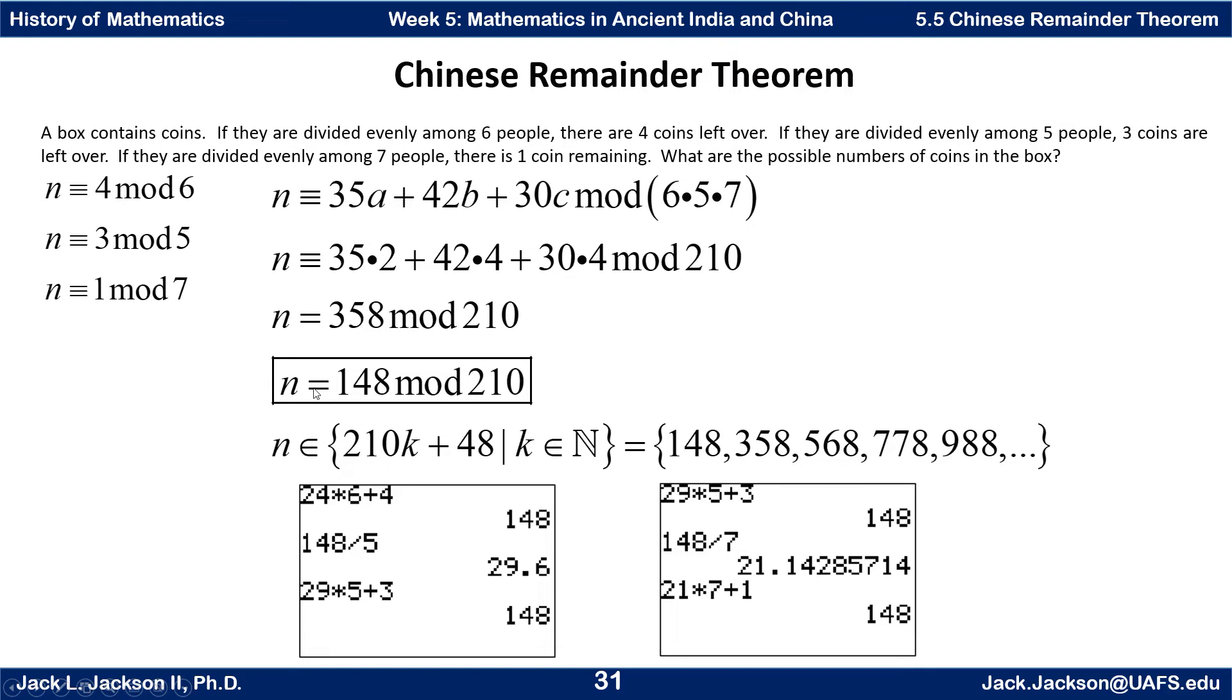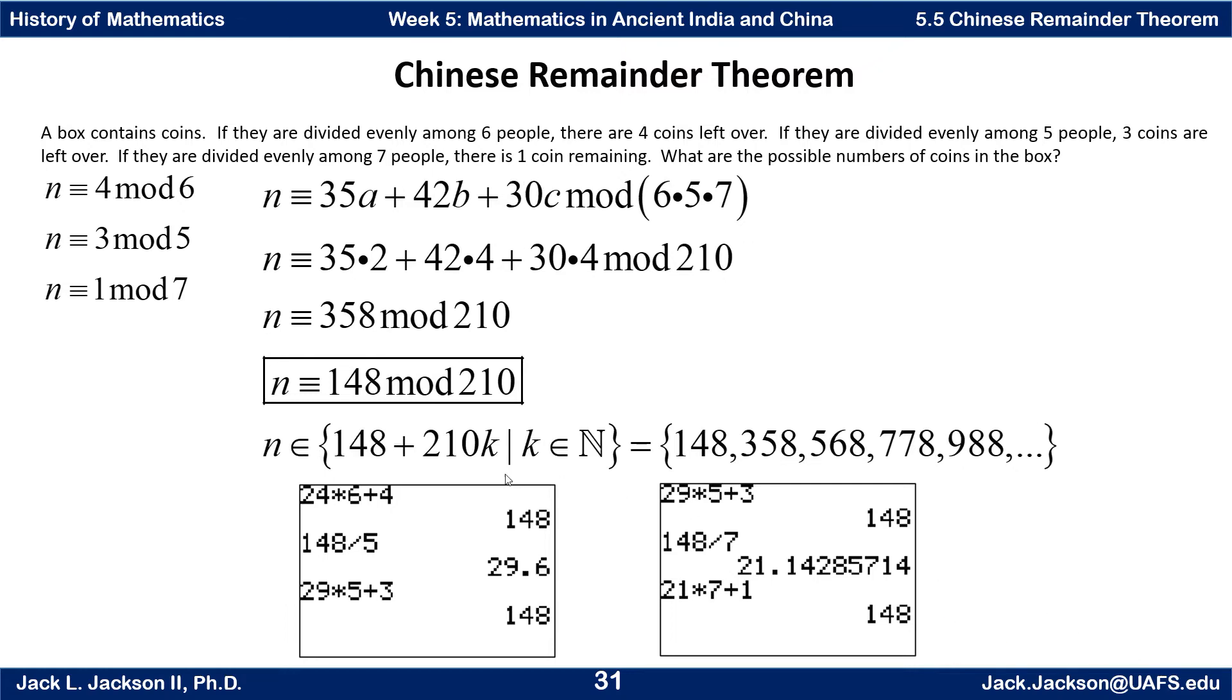So probably you should say n is congruent to 148 mod 210. So in other words, n is an element of the set, n is 148 plus 210 times k, where k could be any natural number. It's a number of coins, so it has to be a whole number. We can't have negatives here. So that's going to be the smallest solution. But if we add 210 to this, we're going to get 358. That's going to work. Add 210 to that, 568, and so forth.